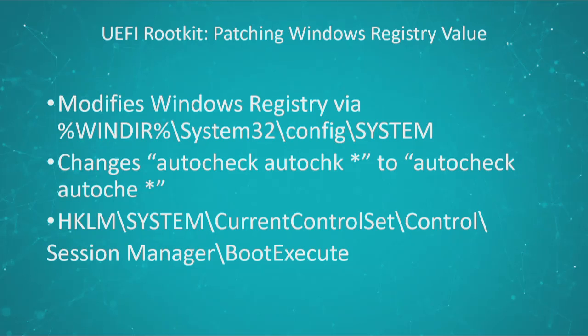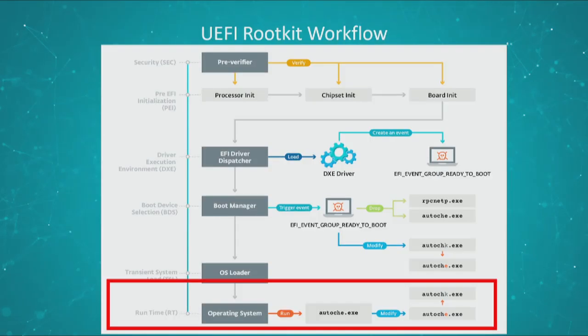What will happen then is that the operating system will be loaded, and at some point it will run autochi.exe instead of autochk.exe. And autochi.exe will drop RPCnetP. But what's interesting here is that autochi.exe reverts back the modification in the Windows registry — it will change autochi back to autochk. So as an end user, if I look in the registry keys, I won't see that any modification happened. It's a pretty interesting stealth mechanism that is enabled by the fact that the malware is coming from the firmware.